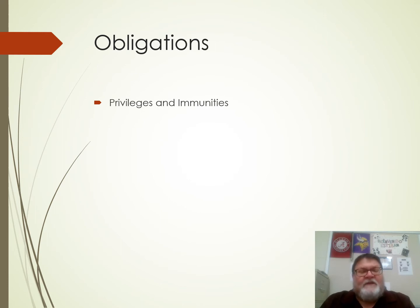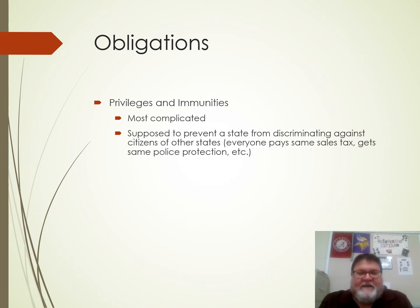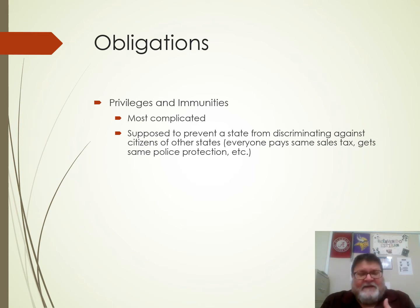Additional obligations — privileges and immunities — is the most complicated part of this. The idea is it's supposed to prevent a state from discriminating against citizens of other states. For instance, you can't charge more sales tax to somebody from out of state than in state. You get the same police protection — they can't ask what state you're from and then refuse to send police. So that's the idea.